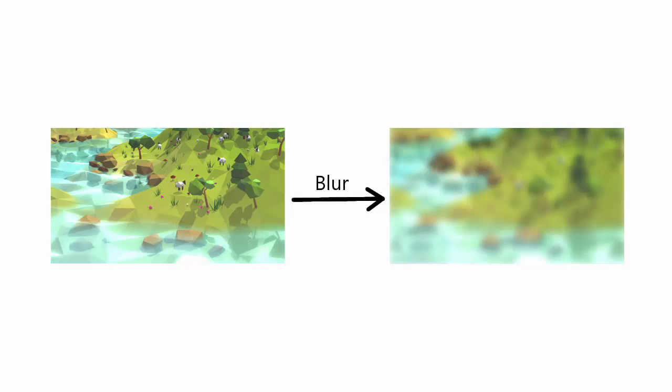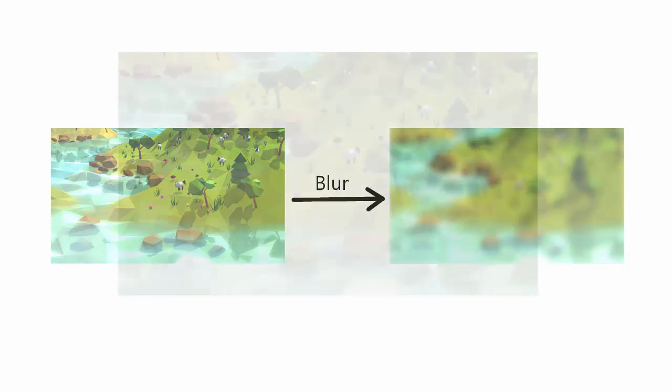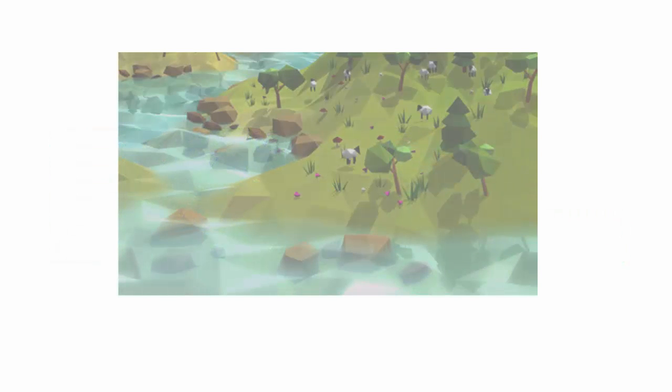Pretty much every type of blur involves averaging together areas of pixels on an image. So for example, let's take this image here and just pretend that all of these squares represent individual pixels of the image. To calculate the colour of any given pixel on the blurred image, we can average together the colours of all of the pixels around it on the original image.